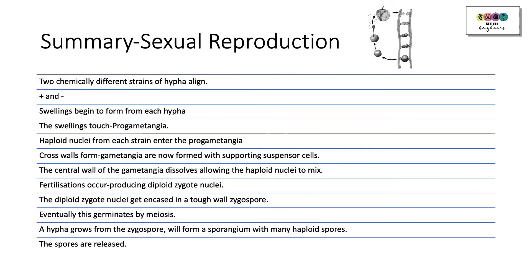Add text to support your learning: two chemically different strains — plus and minus — align and swellings form, touch, and become progametangia. Haploid nuclei enter; cross walls form creating gametangia with suspensor cells. The central wall dissolves, nuclei mix, and many fertilisation events produce diploid zygote nuclei. These are encased in a tough-walled zygospore that germinates by meiosis. A hypha grows from the zygospore, forming a sporangium filled with haploid spores, which are released when it splits.